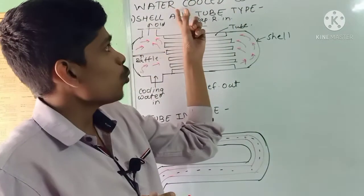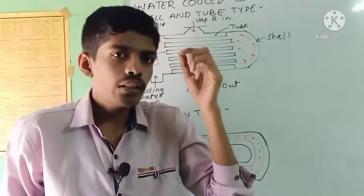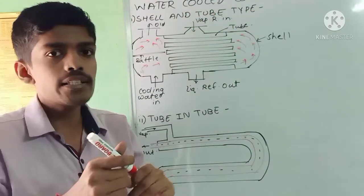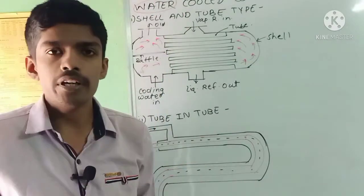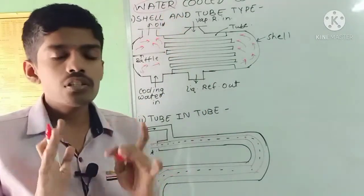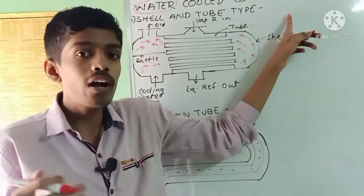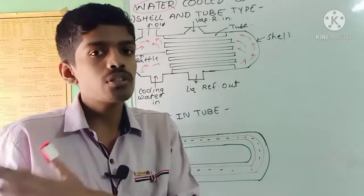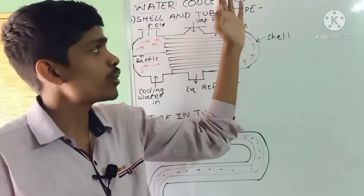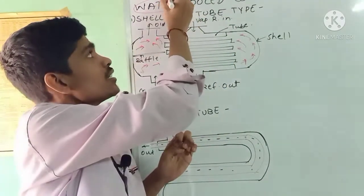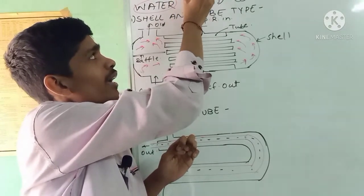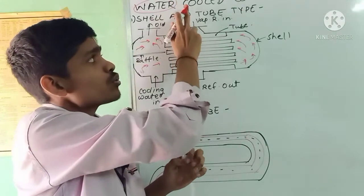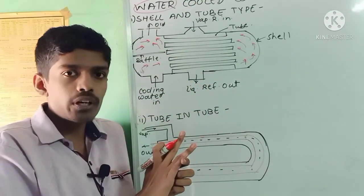Next is the water-cooled condenser. In air-cooled condensers, air is used as the cooling medium, whereas in water-cooled condensers, water is used as the cooling medium. Water-cooled condensers are generally used for high-capacity plants, large cold storages, and huge plants. In these, cooling water is used as the medium to cool the vapor refrigerant.